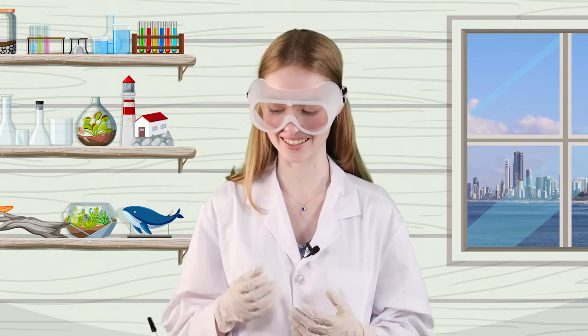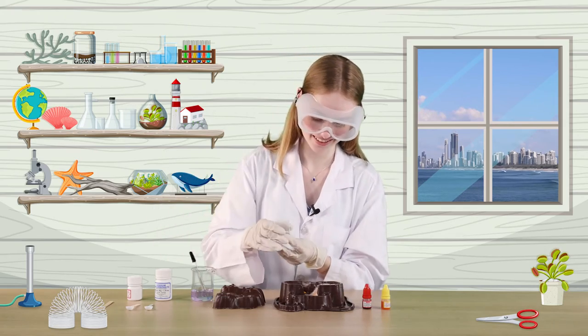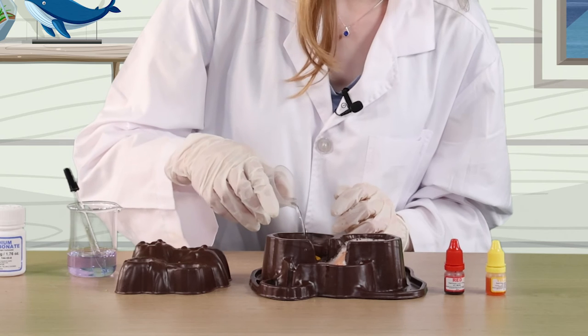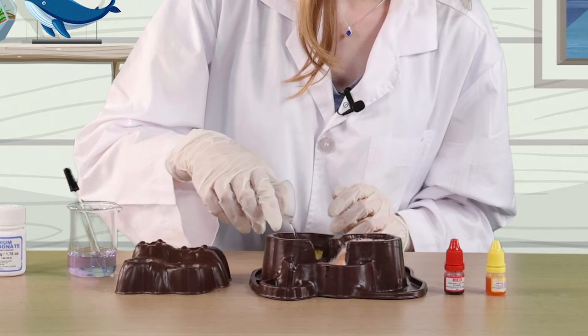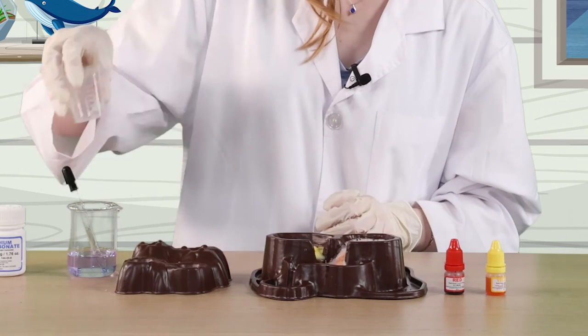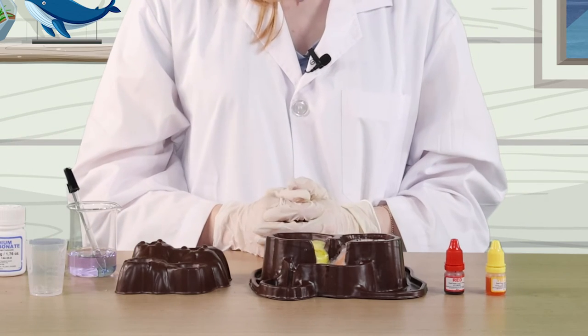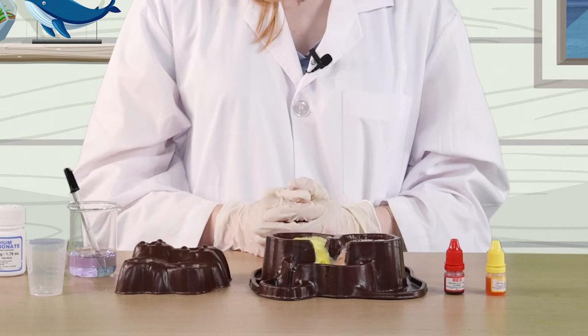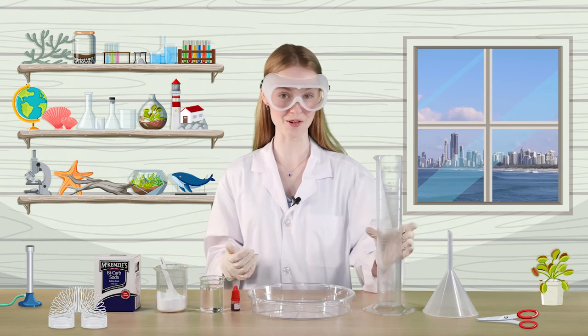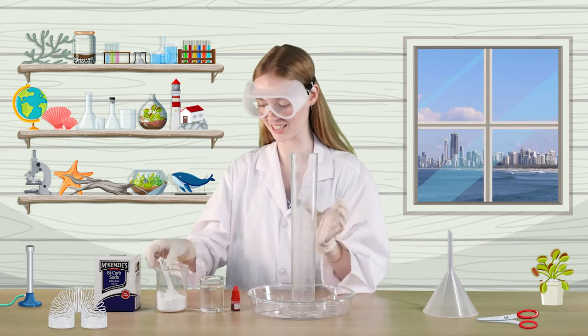Let's see that again! You can also model a volcanic eruption using simple household items, baking soda and vinegar. If you do, make sure there's an adult around to give you a hand. I'll add 4 scoops of bicarb soda to the measuring cylinder.